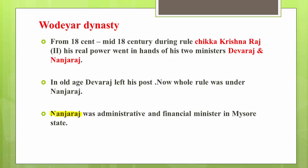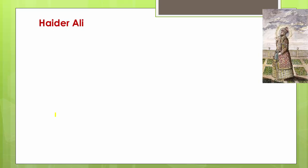During Nanjaraj's time, Haider Ali was able to establish himself as the de facto authority of the kingdom. In 1761, finding opportunity amid all the wars, an army commander named Haider Ali established his de facto authority over the kingdom. So the sequence was: Vijayanagara, then Wodeyar dynasty, then ministers Nanjaraj and Devaraj overtook power from king Chika Krishna Raj, and under Nanjaraj came Haider Ali, who eventually took control.